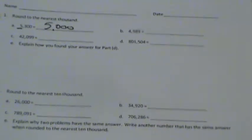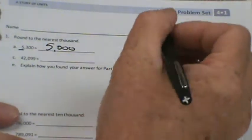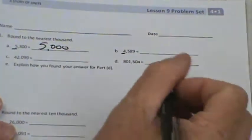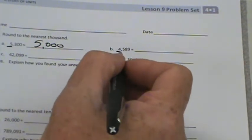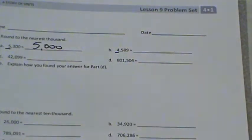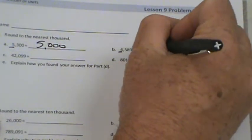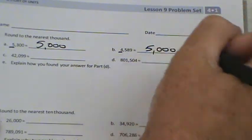Let me zoom in a little bit. Let's continue on to B. 4,589. Remember, we're rounding to the nearest thousand. What's midway between 4,000 and 5,000? It would be 4,500. But we have 4,589. That's greater than the midway point, so we round up to 5,000.